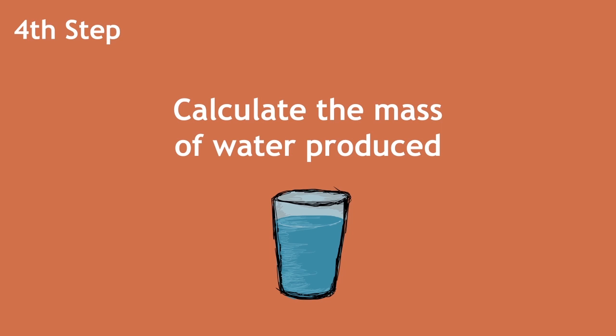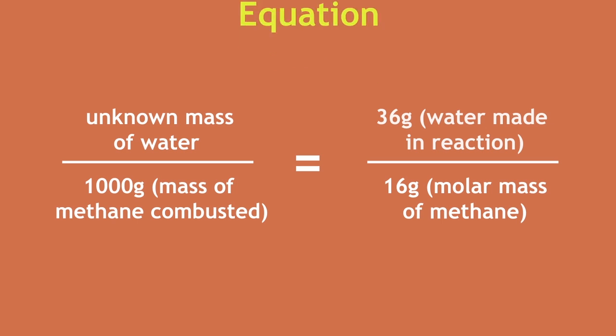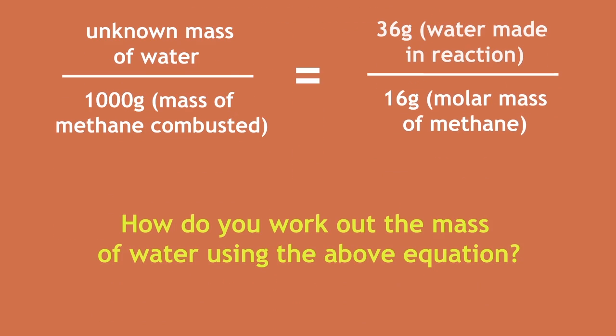The fourth step is to calculate the mass of water produced. In order to do this, you have to set up the equation as shown. Here's a challenge: How would you work out the mass of water using the above equation? Pause and continue when you are ready.